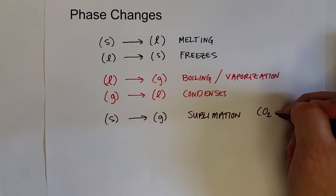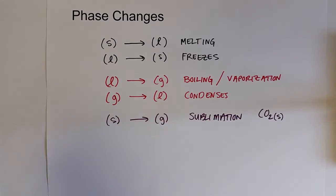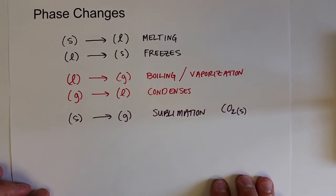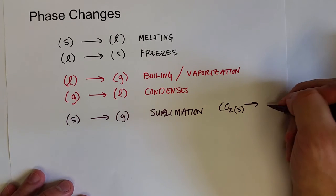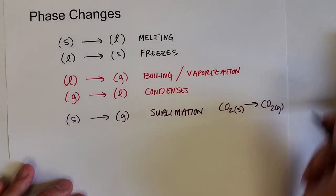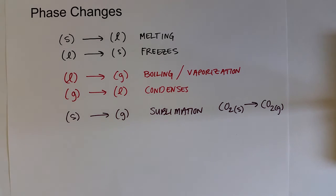CO2 is the sort of go-to example for that. We call solid carbon dioxide dry ice because at atmospheric pressure, it goes from the solid phase directly to the gas phase. It does not melt into a liquid.